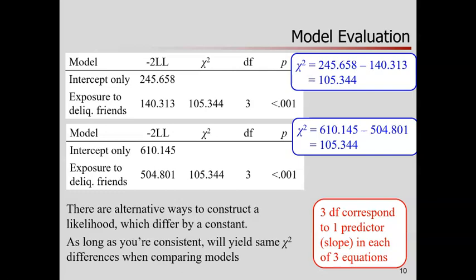This bottom table is the same information, just the other way of constructing a likelihood. The likelihoods are different, but when you do the subtraction to get the chi-square, it's exactly the same — three degrees of freedom, as before. I would reach exactly the same conclusion from this chi-square test.